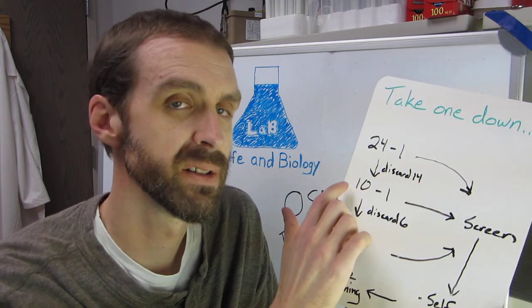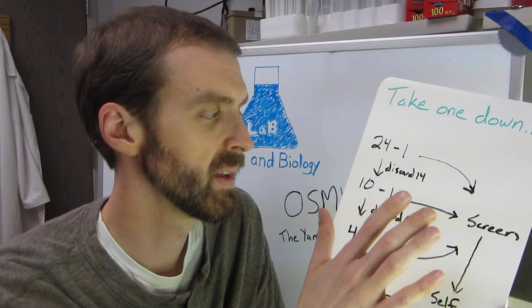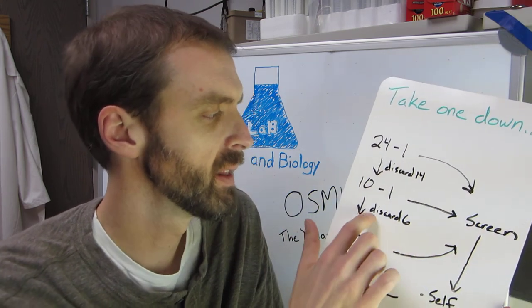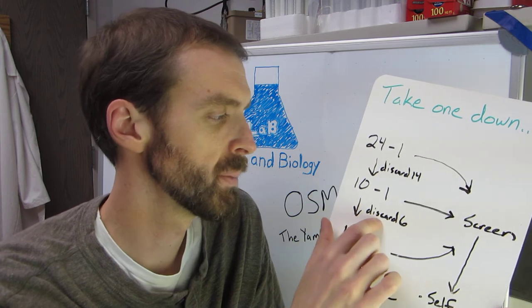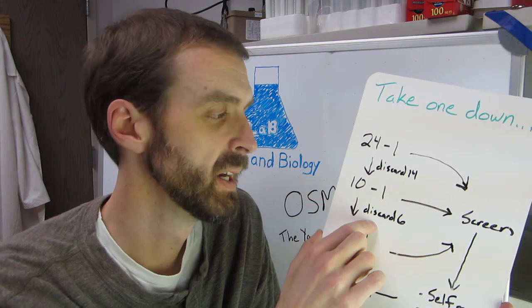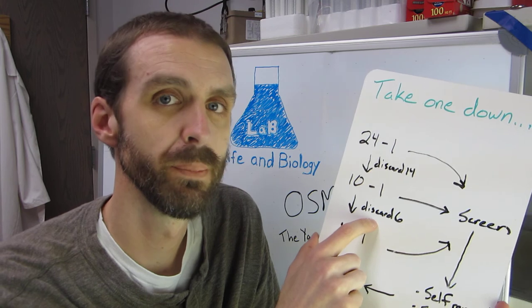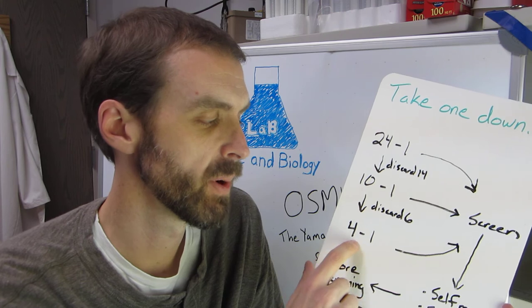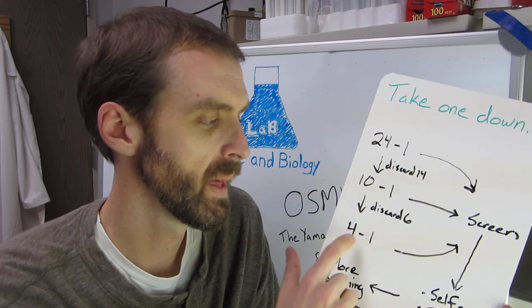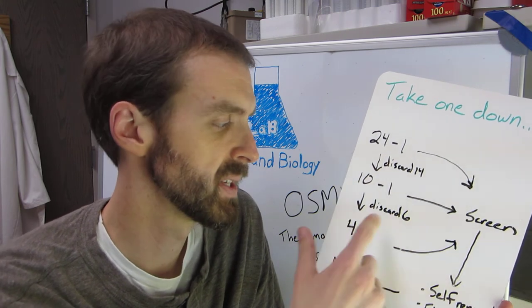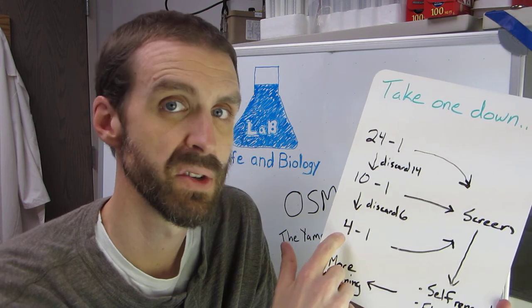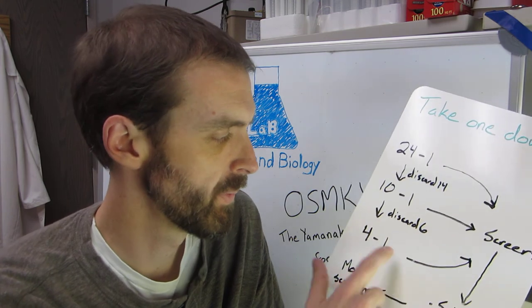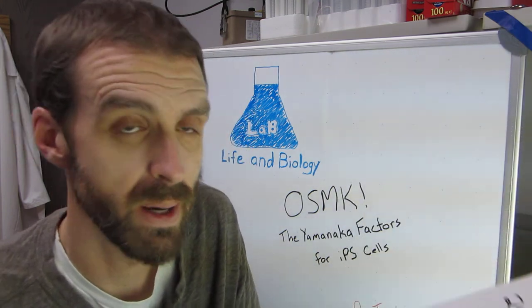And so then they did the same thing. 10 minus 1. So they had factors A through J, for example. And they'd take out A and have only B through J going in. And then they screen. And then from that second screen, they were able to find six that weren't necessary for getting an induced pluripotent stem cell. So they're down to four. And when they did the 4 minus 1 screen, they were unable to get embryonic stem cells from any combination of three out of those four factors.